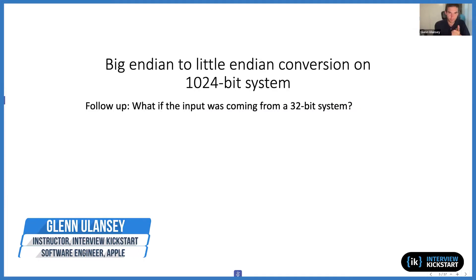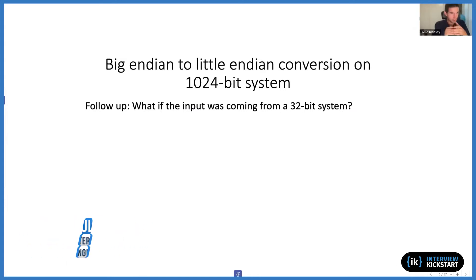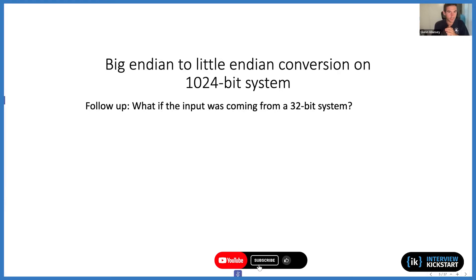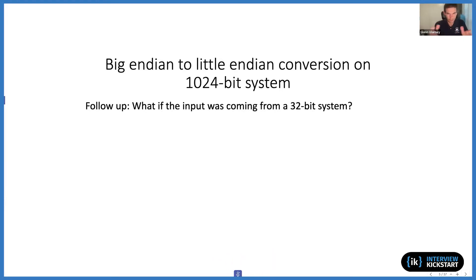The question submitted was asking for an implementation or an example of how you would implement a big endian to little endian conversion given a 1024-bit system. With big endian to little endian, all we're doing is reordering the bytes, so presumably the same code would also work from little endian to big endian.